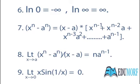Seventh, x raised to the power n minus a raised to the power n equals (x − a) into (x^(n−1) + x^(n−2)·a + x^(n−3)·a² + ... + a^(n−1)), where x is a variable, a is a constant, and n is an integer. If we have any equation like x^n minus a^n, we can solve it using this formula.